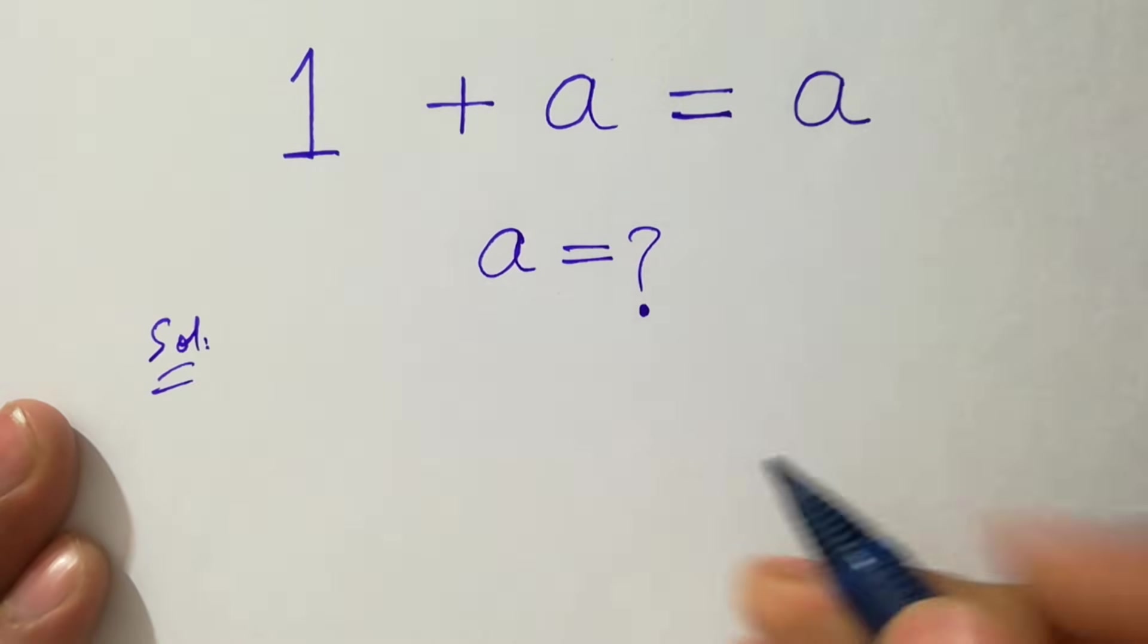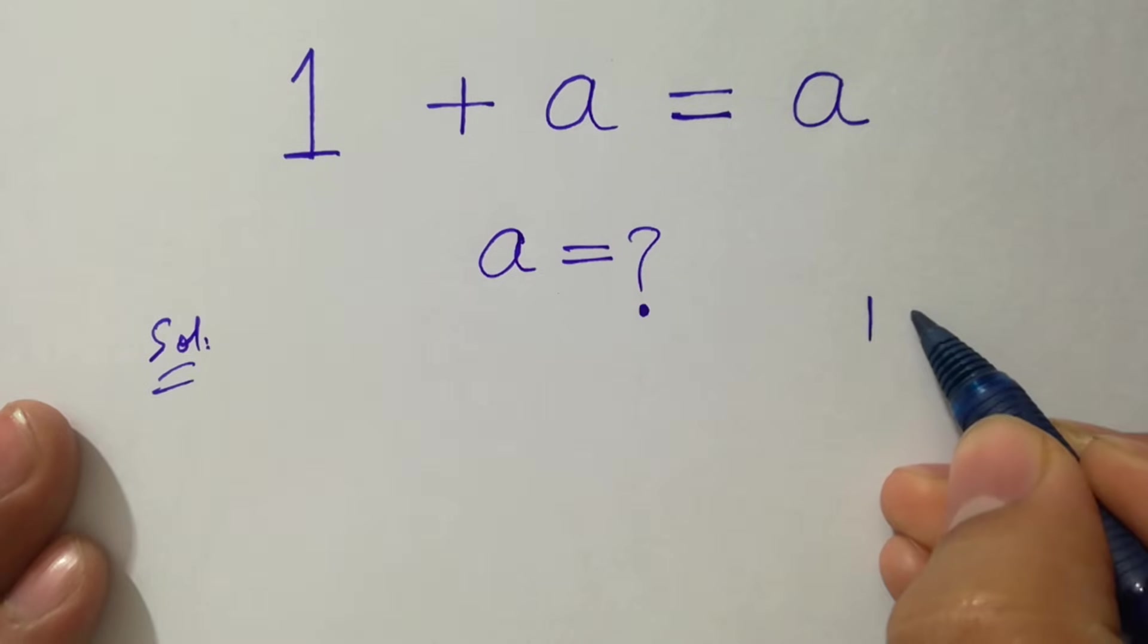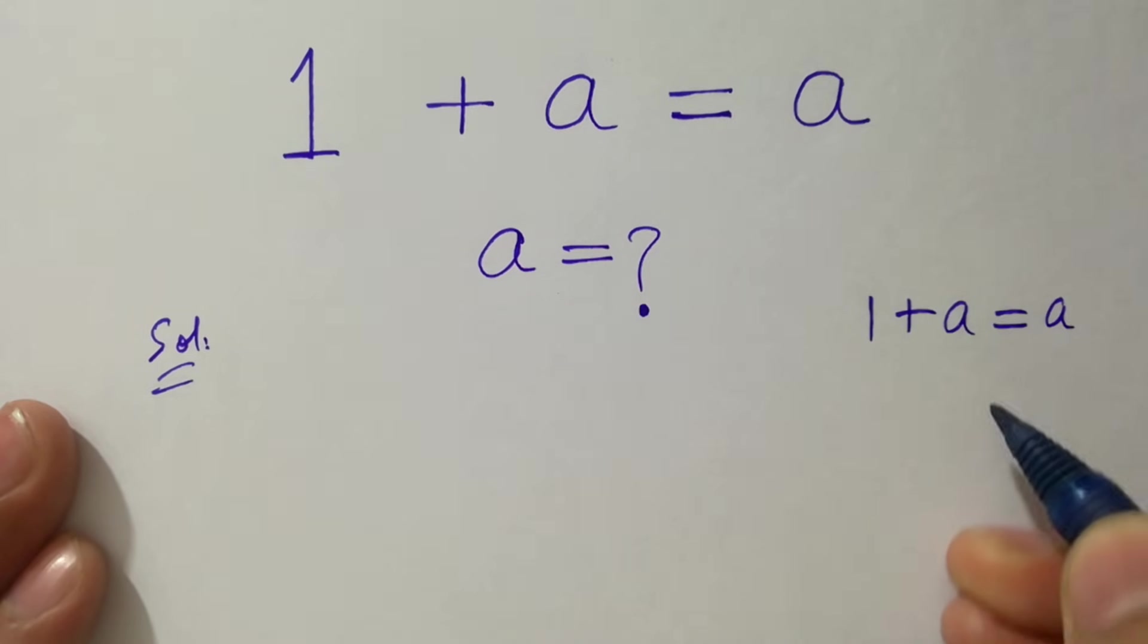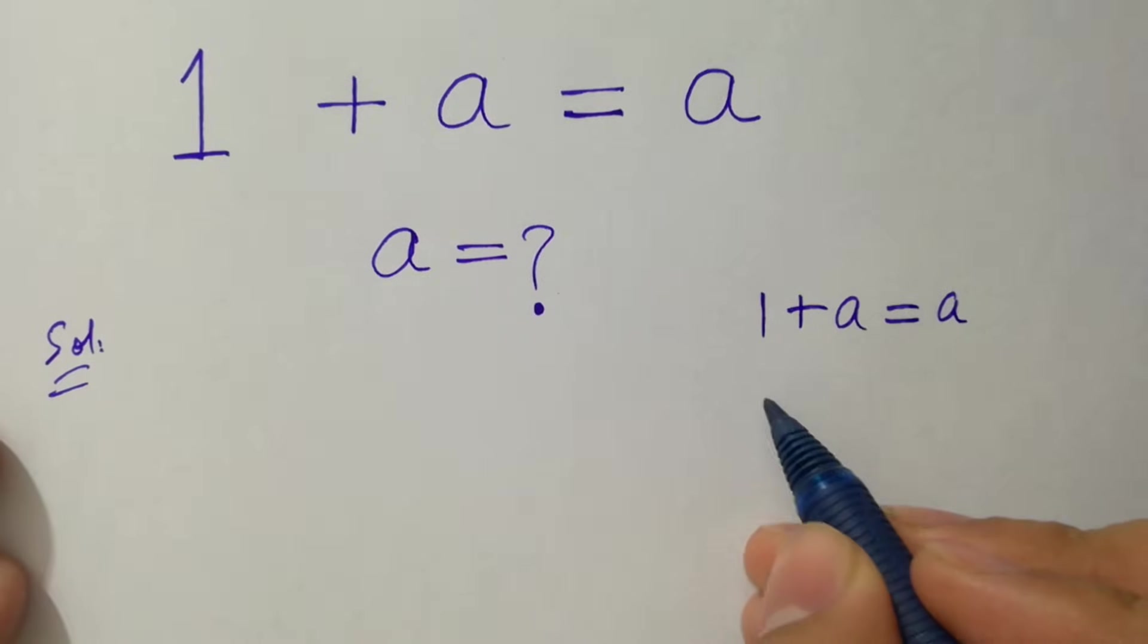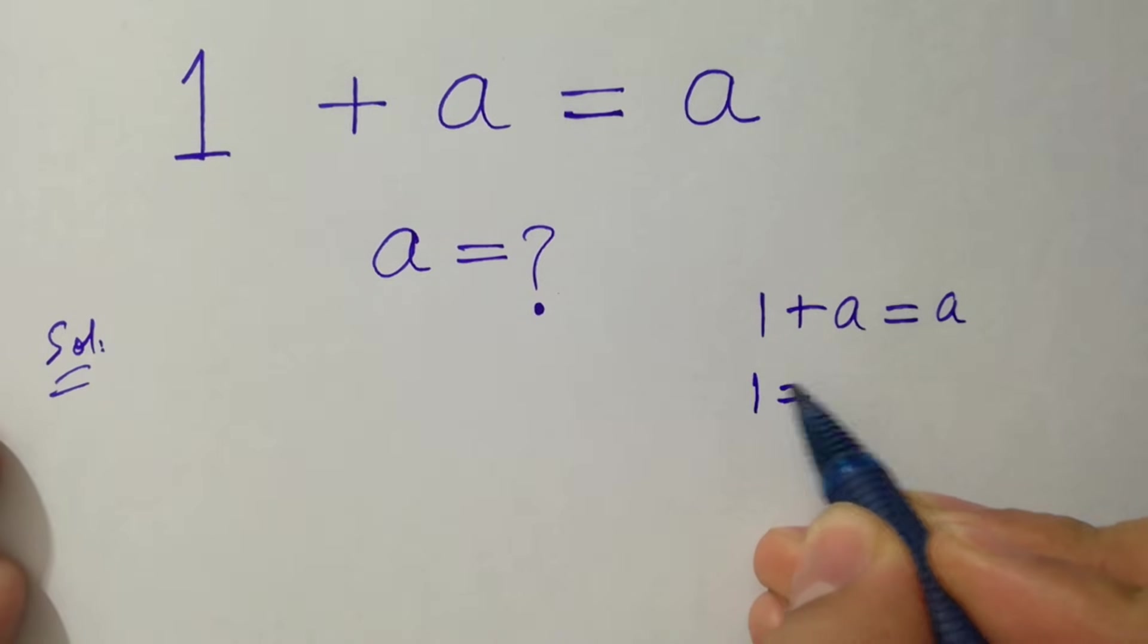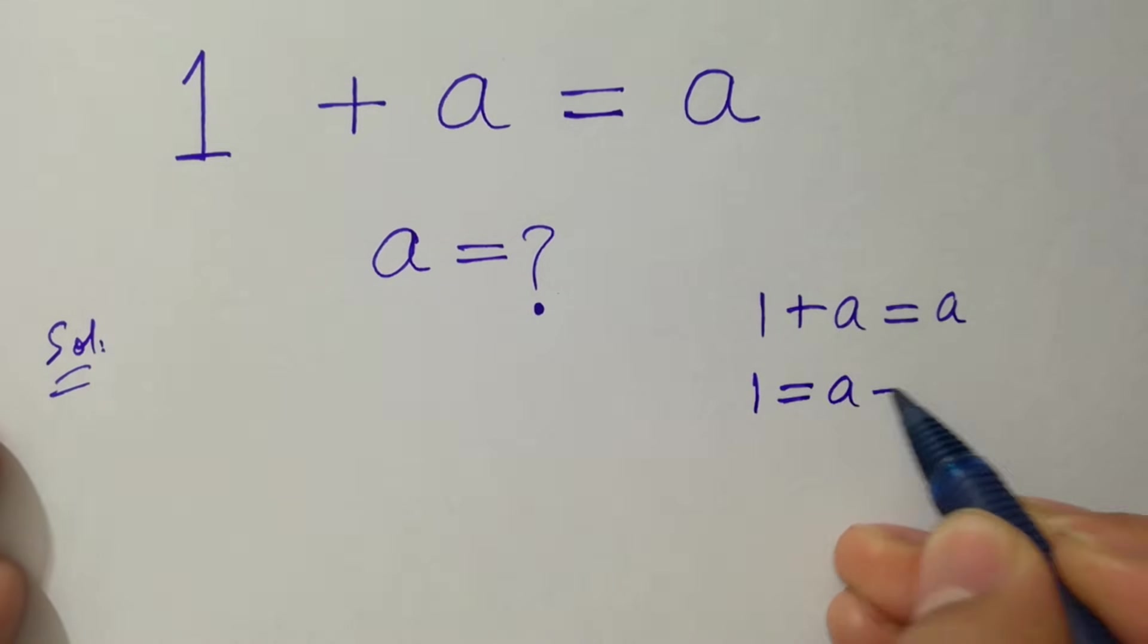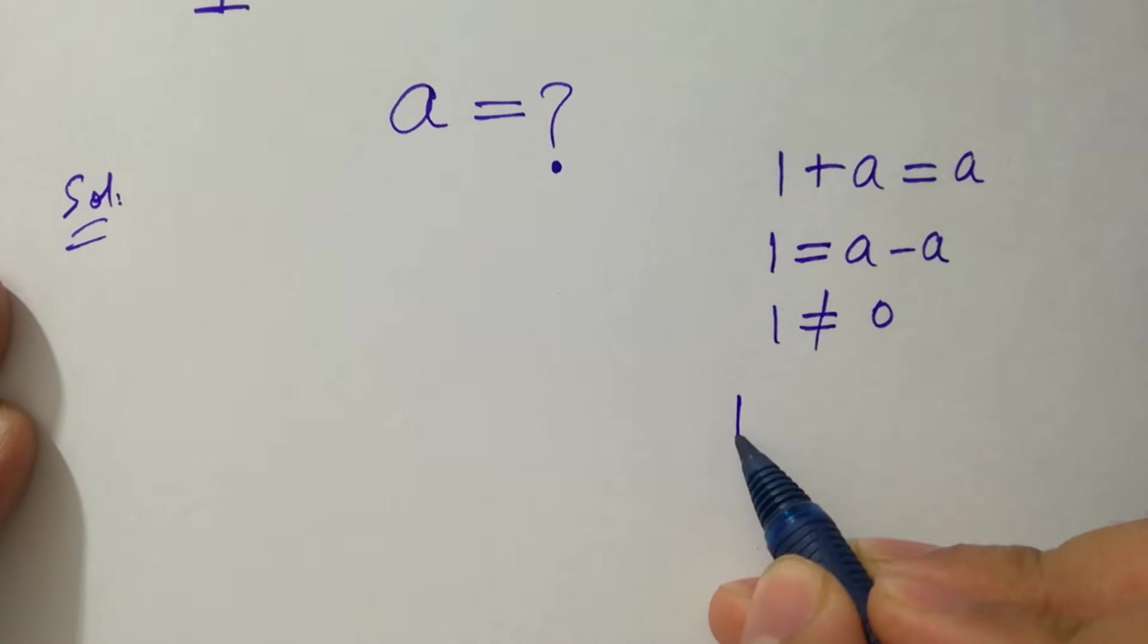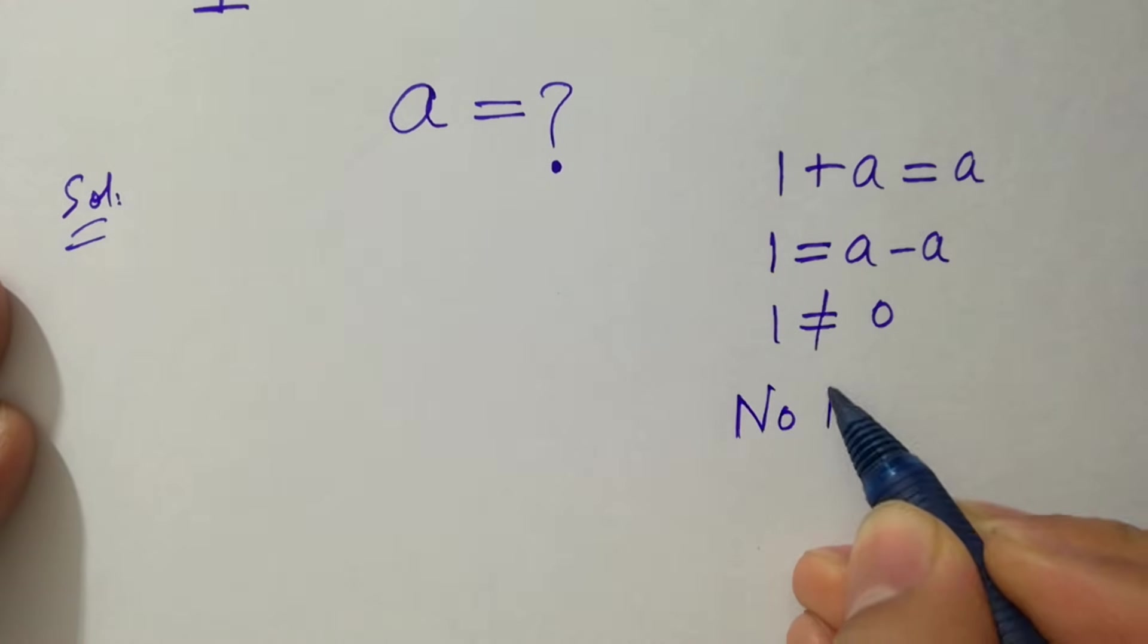If you see this problem, 1 + a = a, then we have 1 = a - a. a - a is 0, which means 1 does not equal 0. So this equation has no real solution.